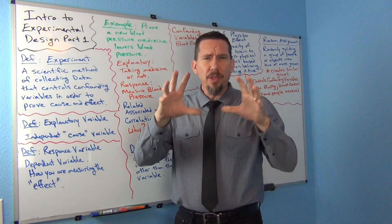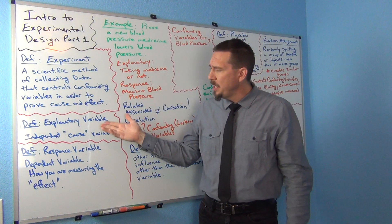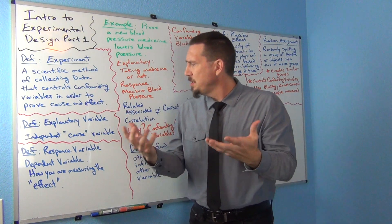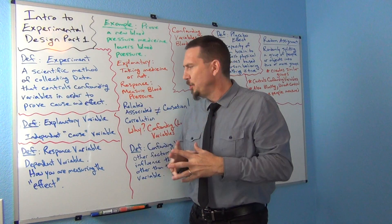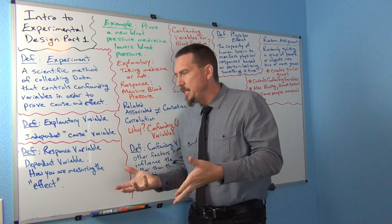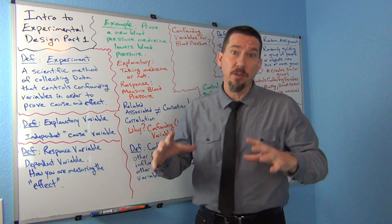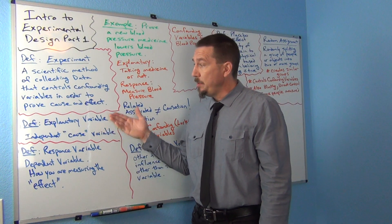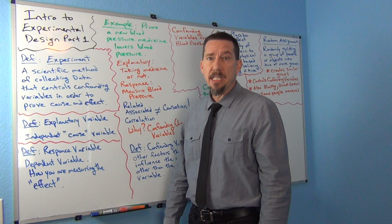When you're trying to show that one thing causes another, we have special terms in stats. The explanatory variable is the thing doing the causing — sometimes called the independent variable or the cause variable. The response variable, sometimes called the dependent variable, is how you are measuring the effect.